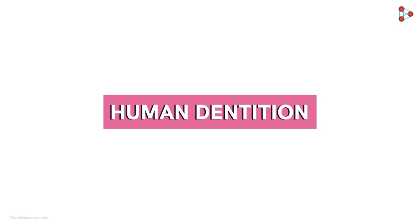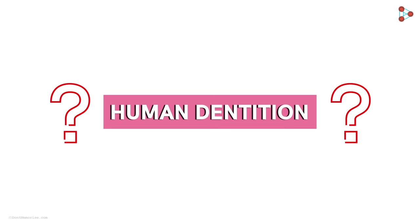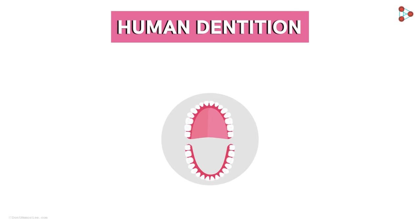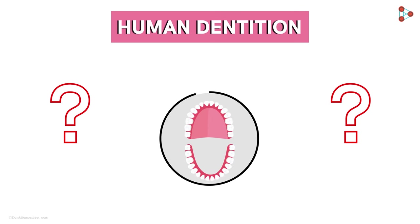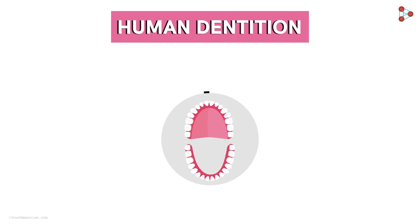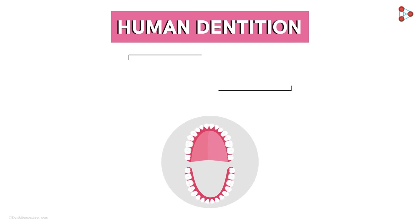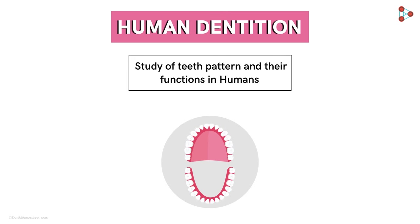We concluded the previous video with a new term called human dentition. Any idea what it could mean? Something related to teeth, but what exactly is it? Let us understand the definition of human dentition first. It is defined as the study of the teeth pattern and their functions in humans.